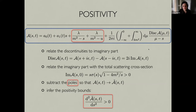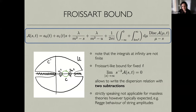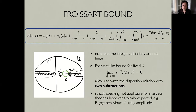These positivity bounds show that the assumptions of unitarity, analyticity, and crossing symmetry lead to very powerful statements. Relevant to gravity, one important assumption made when deriving positivity bounds is that the Froissart-Martin bound is valid: the statement that the amplitude at large values of energy, when s goes to infinity, grows slower than s². Without this assumption, we would be unable to treat the arc integrals in the dispersion relation. The assumption that the amplitude doesn't grow faster than s² allows us to express the arc integrals in terms of two subtractions.